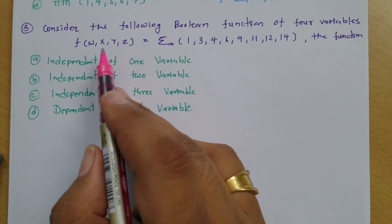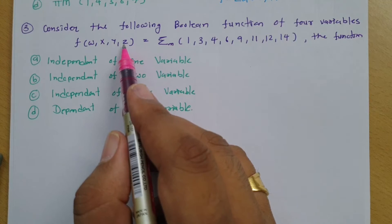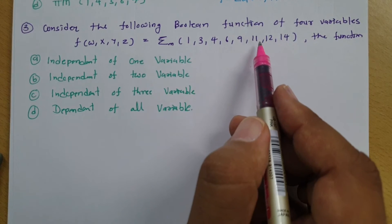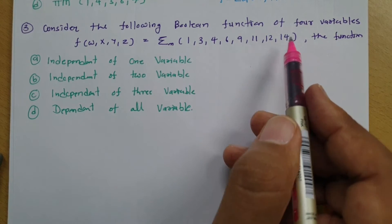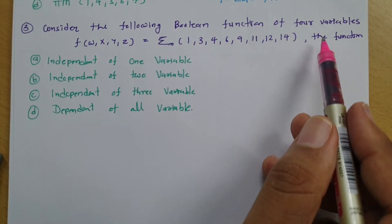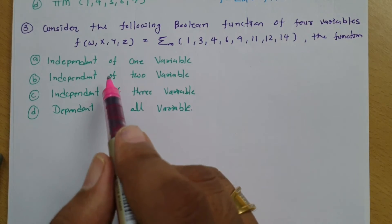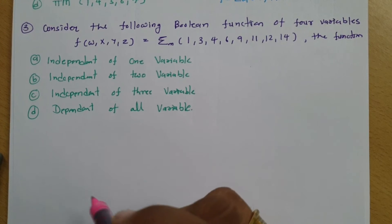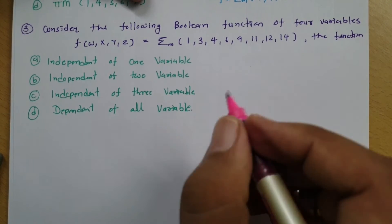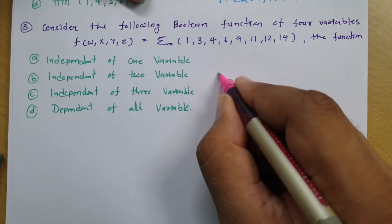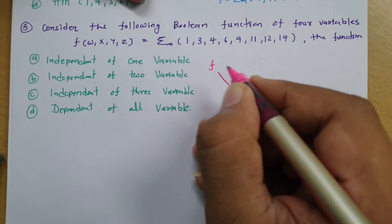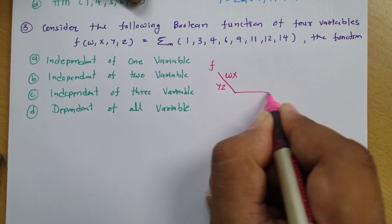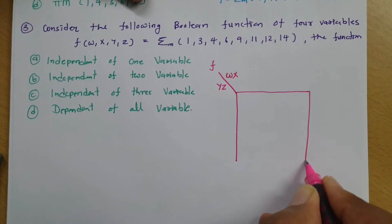Now we have the third question. Function f is a function of W, X, Y, and Z — a four-variable function. It is given as a summation of minterms 1, 3, 4, 6, 9, 11, 12, and 14. We need to identify whether f is independent of one variable, two variables, three variables, or depends on all variables. We will solve this using a KMAP.